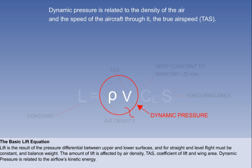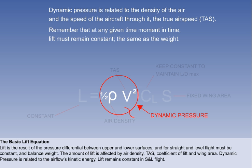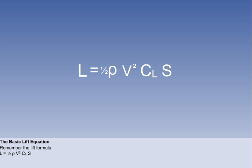Dynamic pressure depends on air density and TAS, and is related to the kinetic energy of the airflow. So the formula is based on half the density and the square of the TAS. Remember that for straight and level flight, lift must remain constant. It is important to remember this formula: L equals half rho V squared times CL times S.